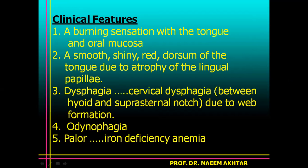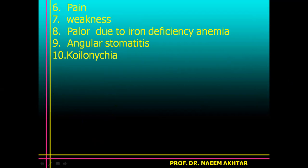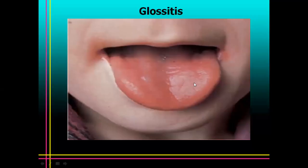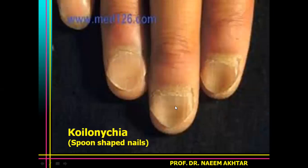Odynophagia may be seen, and the patient is usually having pallor due to iron deficiency anemia. The patient may have pain, weakness, and pallor. Angular stomatitis and koilonychia are also seen — spoon-shaped nails are typically seen in patients with Plummer-Vinson syndrome, along with smooth red dorsum of the tongue due to atrophy of the lingual papillae.